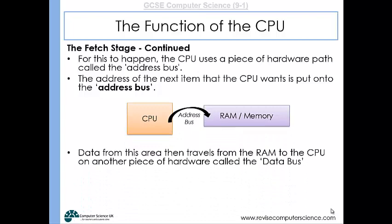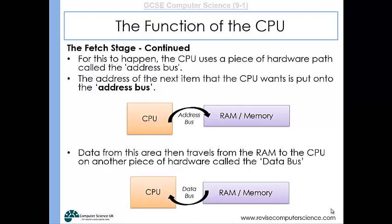Then the second really important bit of hardware is the data bus. Now that is where the data is sent back to the CPU from the RAM. So remember those two things: the address bus and the data bus. There is also a control bus which will just make sure that everything is ticking over at the right pace, but for GCSE, address bus and data bus are the two important ones that you need to remember.